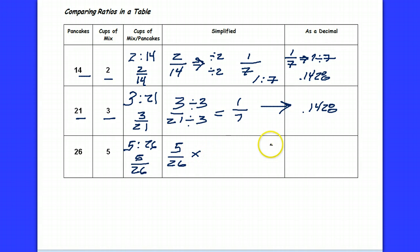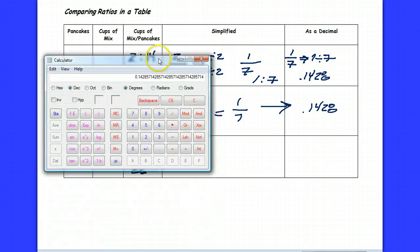And in fact, if I look for the decimal equivalent of that, pulling my calculator again, and I take 5 divided by 26, that's going to be equivalent to about 0.1923.